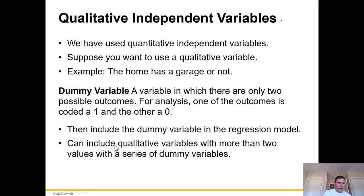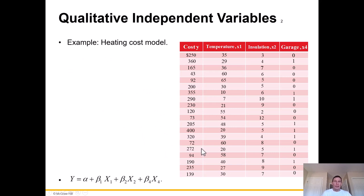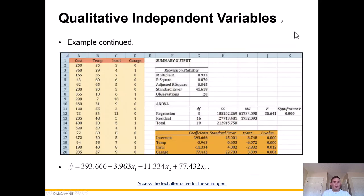This is something I've done personally in research papers and it works very well. We can include qualitative variables with more than two values using a series of dummy variables — not just binary, but one, two, three, four, five, however many you want. Looking at the heating cost model with X sub 4 — the garage variable — zero is the absence of a garage and one is the presence. You can see the coefficient, standard error, T stat, and a very robust p-value well under 0.05. The presence or absence of a garage is statistically significantly related to the dependent variable.